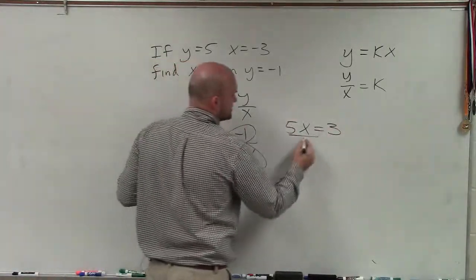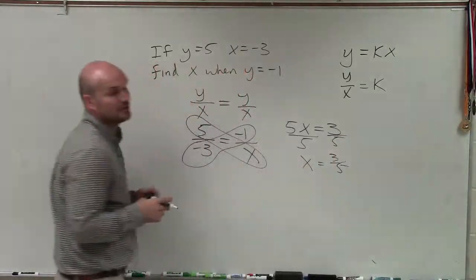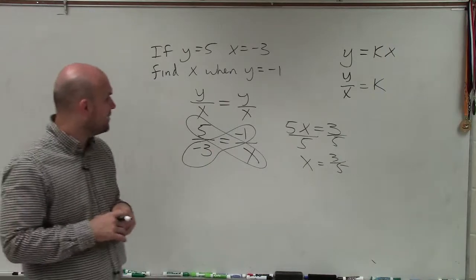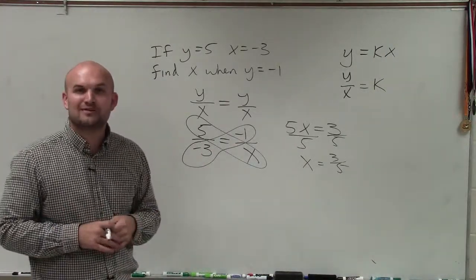Now, I need to solve for x, so I divide by 5 on both sides, and x equals 3 fifths. So there you go, ladies and gentlemen. That is how you determine x when you have two direct variations. Thanks.